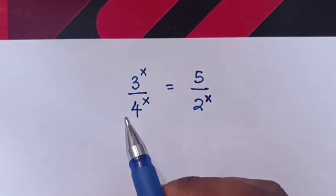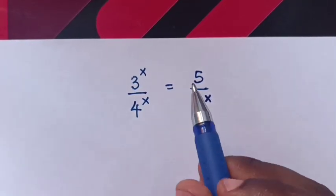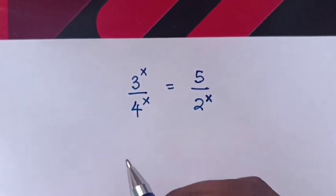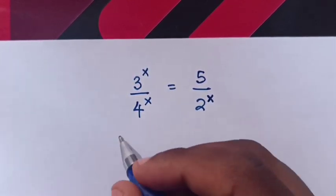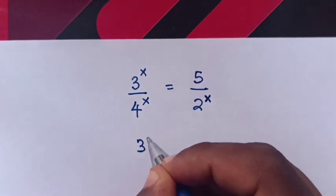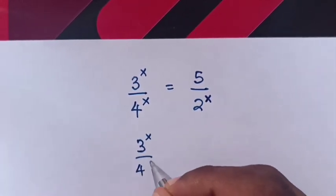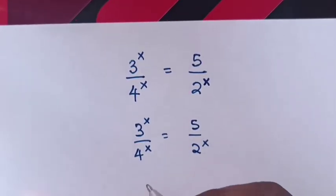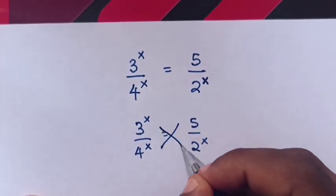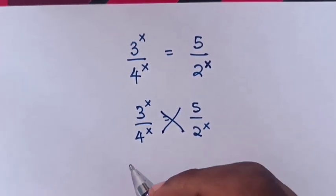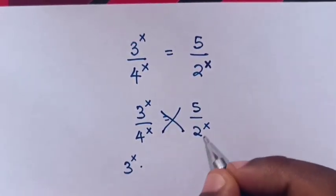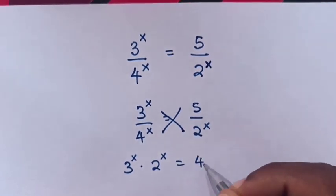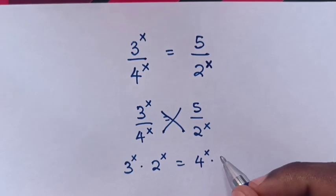Hello. To solve 3^x over 4^x is equal to 5 over 2^x. First, we'll cross multiply from 3^x over 4^x is equal to 5 over 2^x. When we cross multiply, it will be 3^x times 2^x is equal to 4^x times 5.